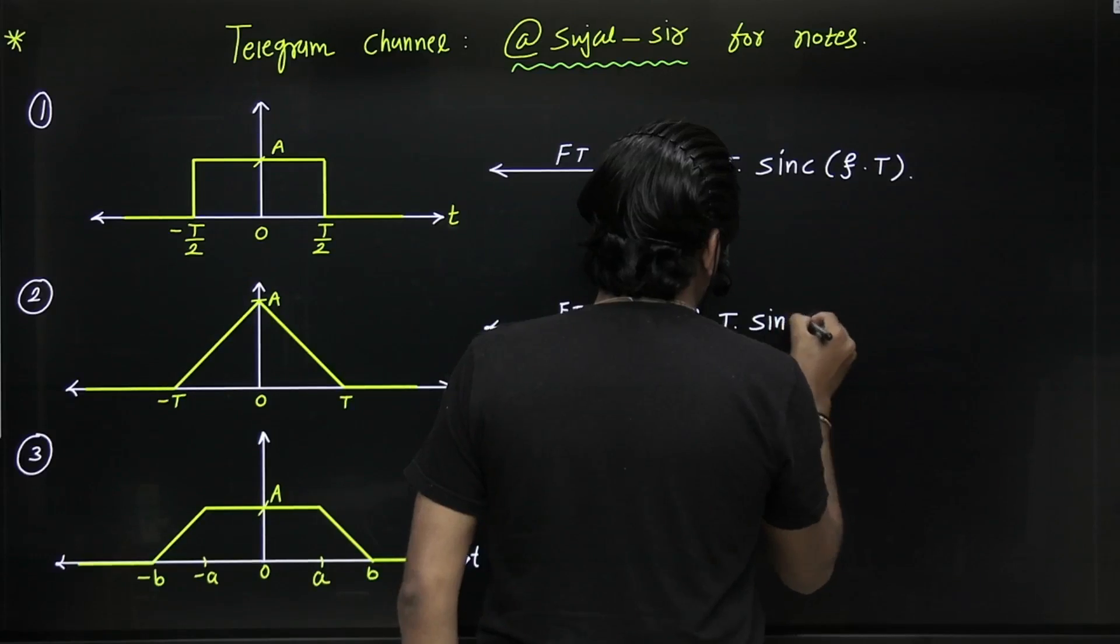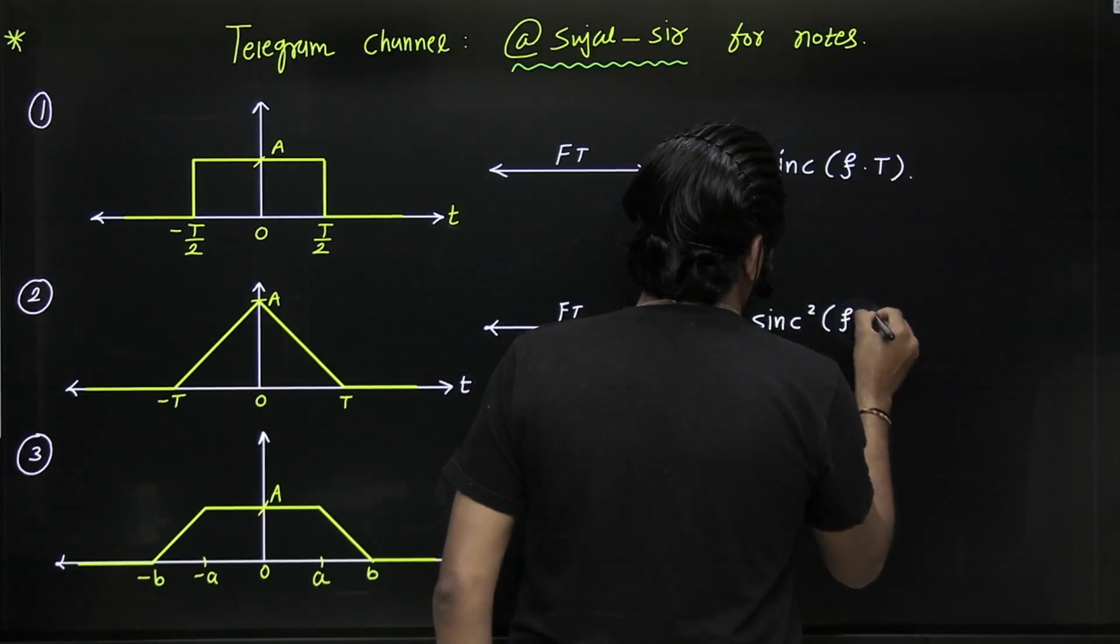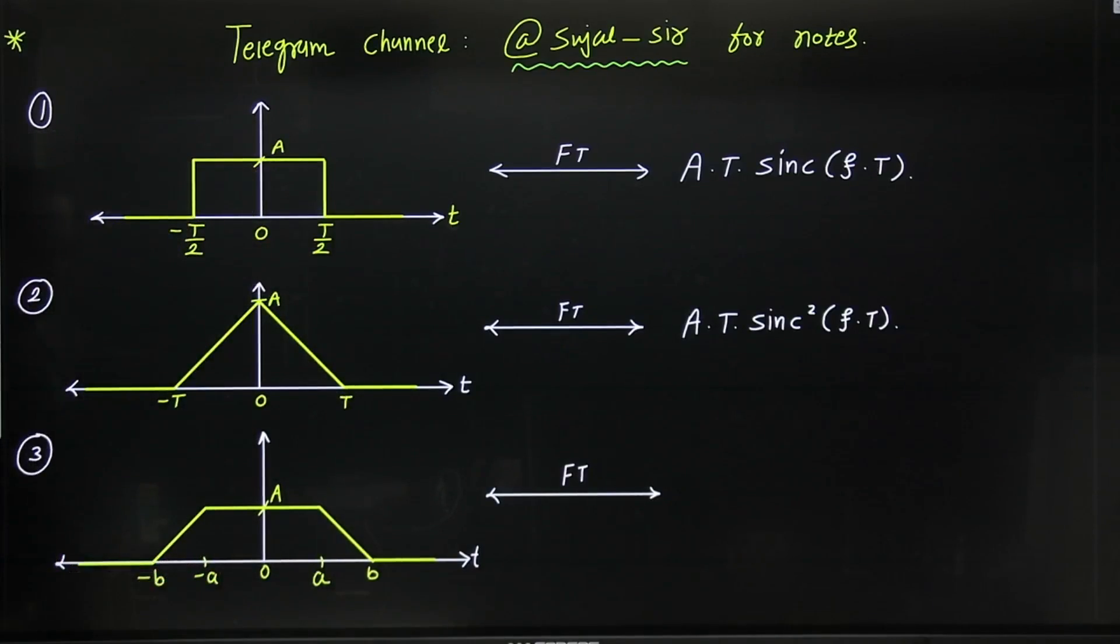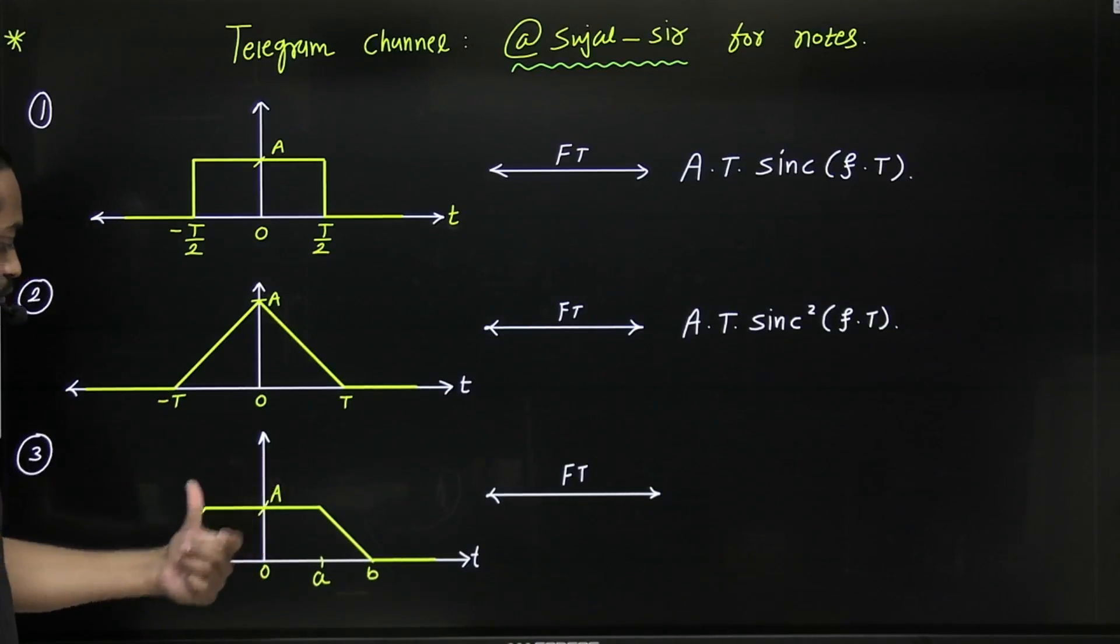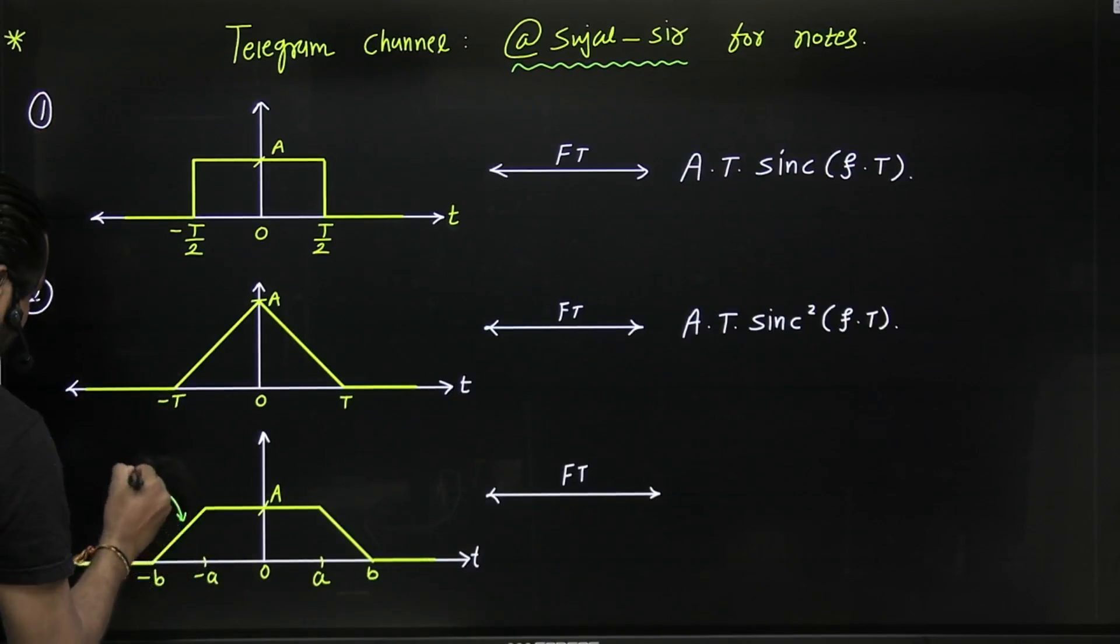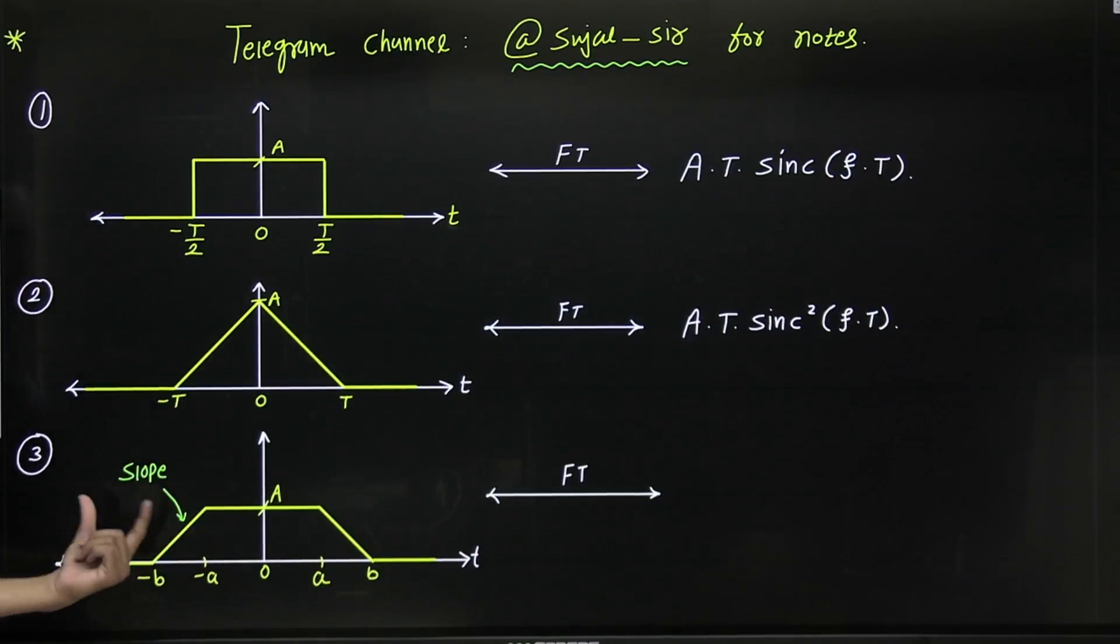The last one is very important. If it is a trapezoidal function and it's symmetrical, meaning it's an even function with amplitude a, then first of all you have to find the slope. Here, this one slope dy by dx, simply slope. And you can take the magnitude of this slope.